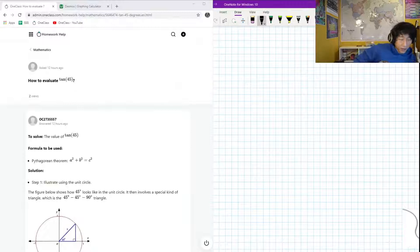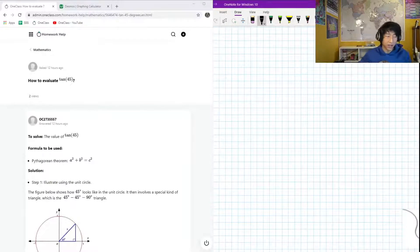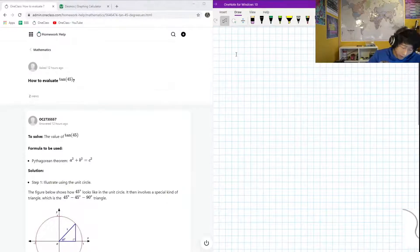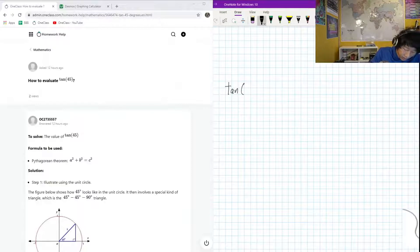Okay, so here we have the next question on the menu today, and it is asking us how do we evaluate tan 45, or pretty much what this is saying is tan 45 degrees is equal to, let's just say x.